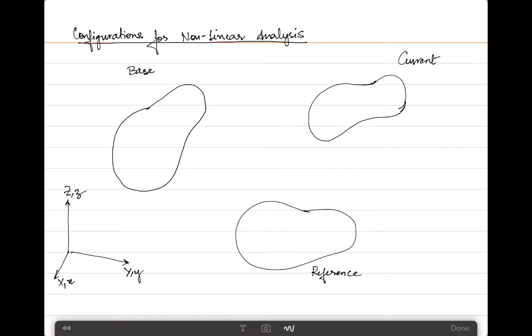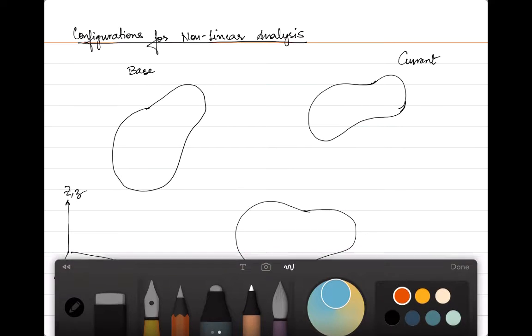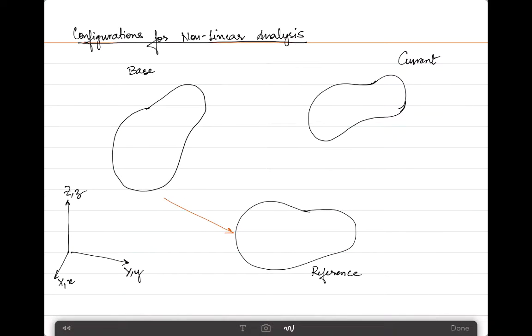Starting with the base, moving on to the reference, and finally to the current. You can represent the base by writing either CB or C0, and the current configuration as C or C at time T.